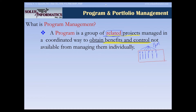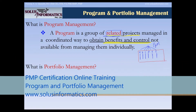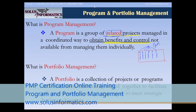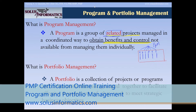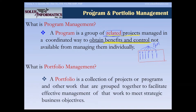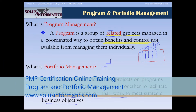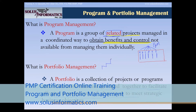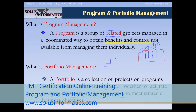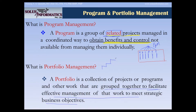If you remove the word 'related,' it becomes a portfolio, because a portfolio is a collection of projects and programs that are not necessarily related but are grouped together to facilitate effective management of that work to meet strategic business objectives. On the lowest level you have a project expeditor, then a project coordinator, then the project manager, then the program manager, and on top of that you would have a portfolio manager.